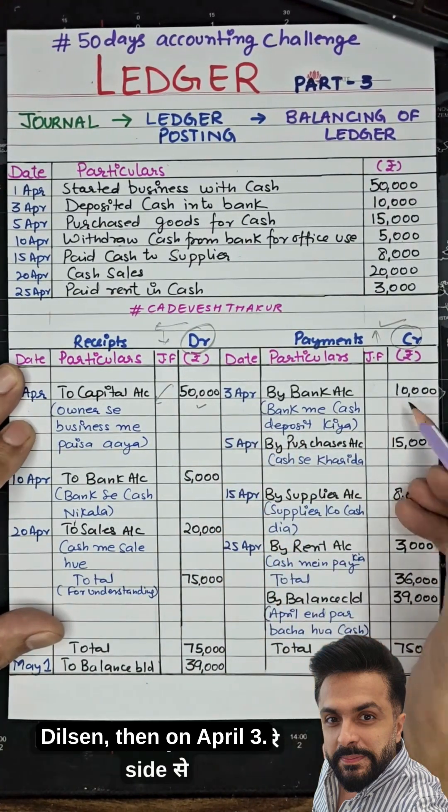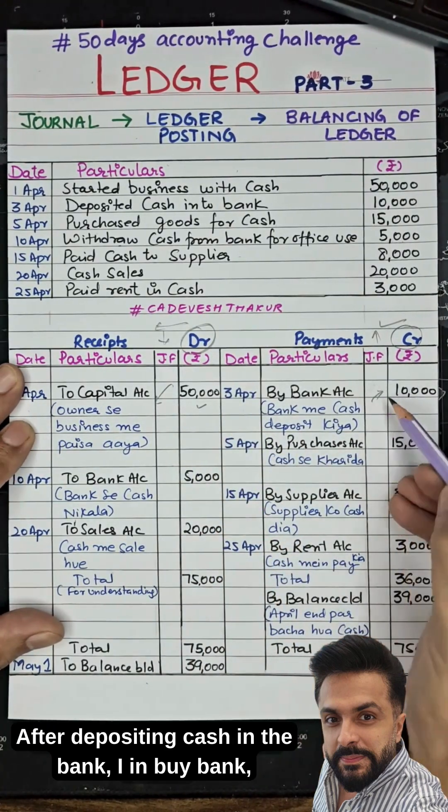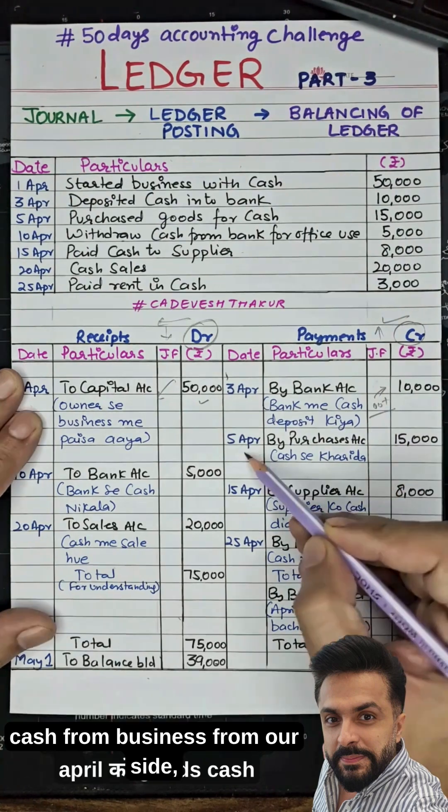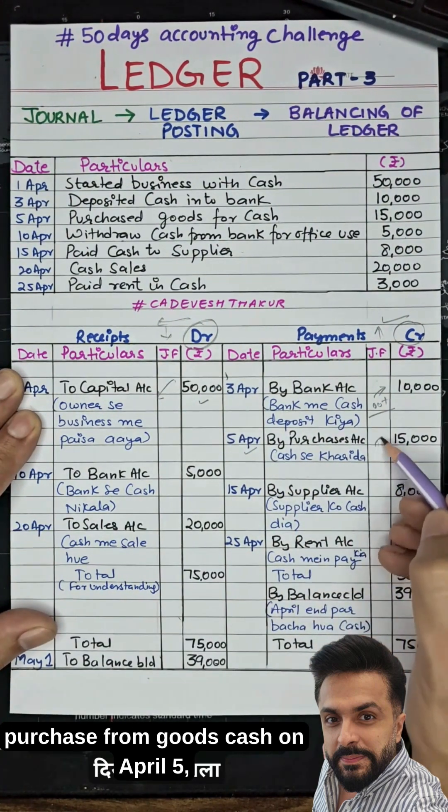On April 3rd, after depositing cash in the bank, cash went out from the business to the bank — this is a cash outflow.